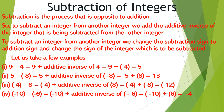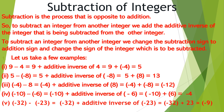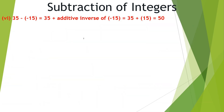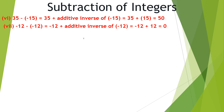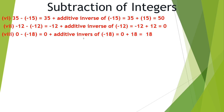Minus 10 minus minus 6 equals minus 10 plus the additive inverse of minus 6, which equals minus 4. Minus 32 minus minus 23 equals minus 32 plus the additive inverse of negative 23, which equals minus 32 plus 23, equals negative 9. Now 35 minus minus 15 equals 35 plus the additive inverse of minus 15, which equals 35 plus 15, equals 50. Minus 12 minus minus 12 equals minus 12 plus the additive inverse of negative 12, equals minus 12 plus 12, equals 0.